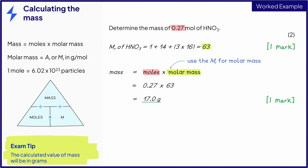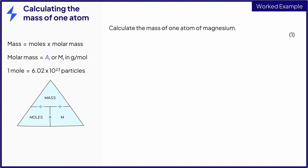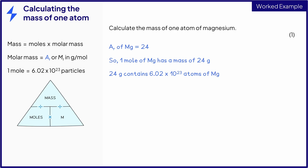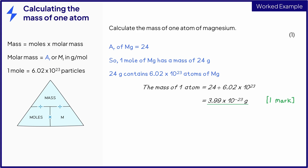Remember that when you use this equation, the mass will be given in grams. This question asks you to calculate the mass of one atom of magnesium. You know that the relative atomic mass of magnesium is 24, which means that one mole of magnesium has a mass of 24 grams. So one mole, or 24 grams, will contain 6.02 times 10 to the power of 23 atoms. To calculate the mass of one atom, we need to divide the mass of one mole by the number of atoms in one mole, which gives us this value, rounded to three significant figures.